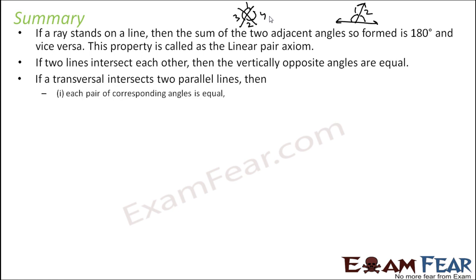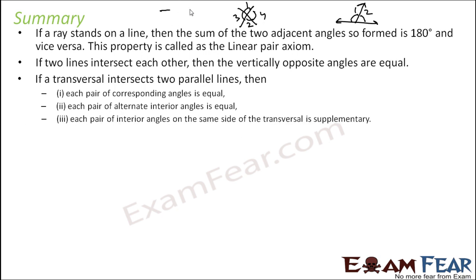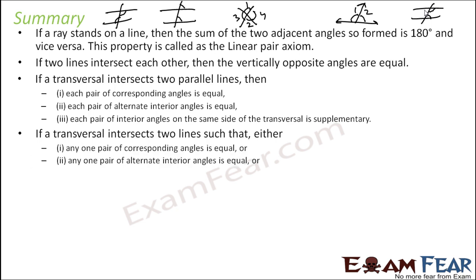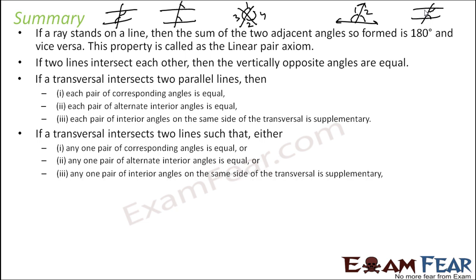If a transversal intersects two parallel lines, each pair of corresponding angles are equal, each pair of alternate interior angles are equal, and interior angles on the same side of the transversal are supplementary. Conversely, if a transversal intersects two lines such that any one of these conditions holds, then the lines are parallel.